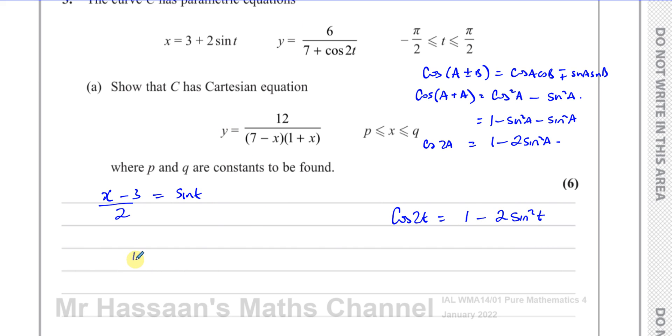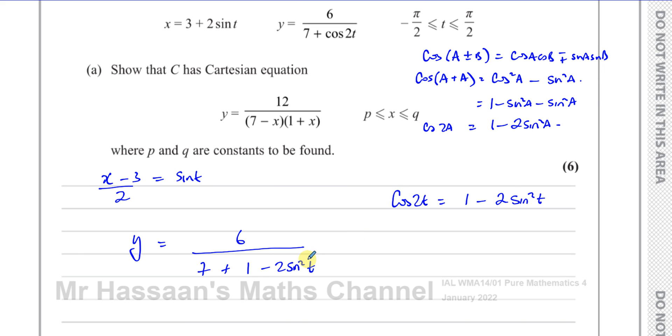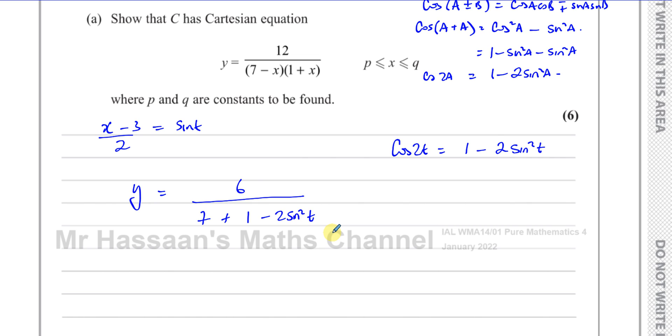So I can take the Y equals, and I have 6 over 7 plus, and instead of cosine 2T, I can write 1 minus 2 sine squared T. So that's sorted that out in terms of being able to deal with this. And remember, sine squared T is the same as sine T all squared.